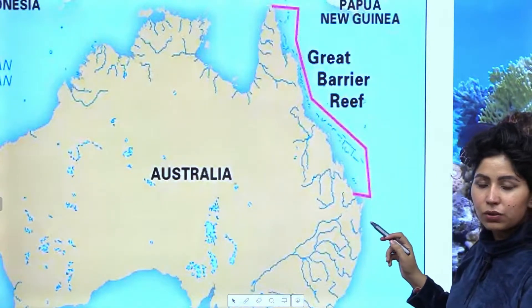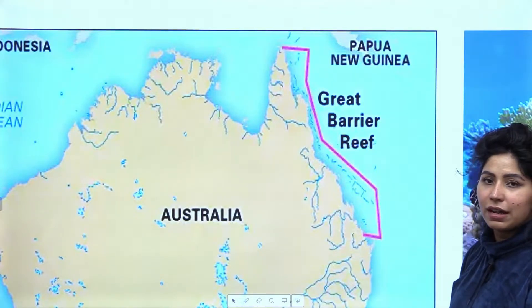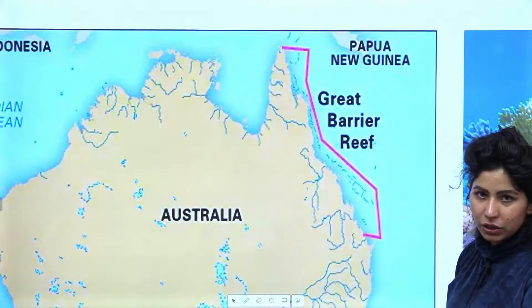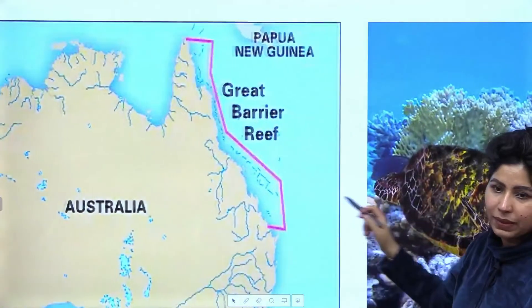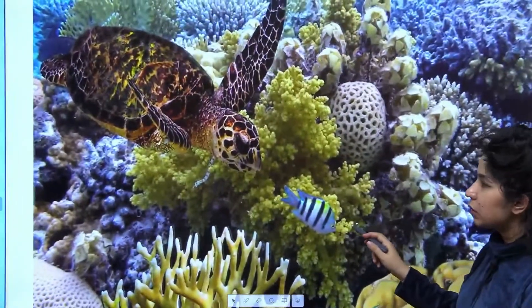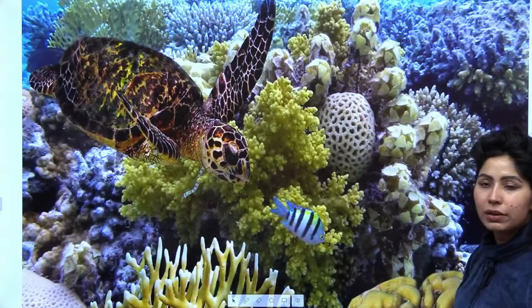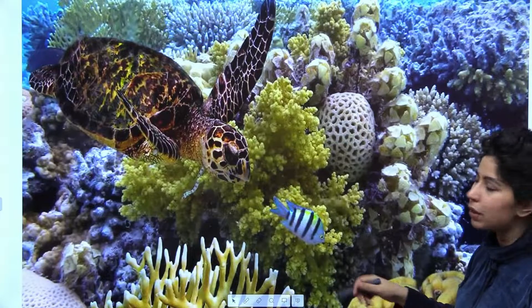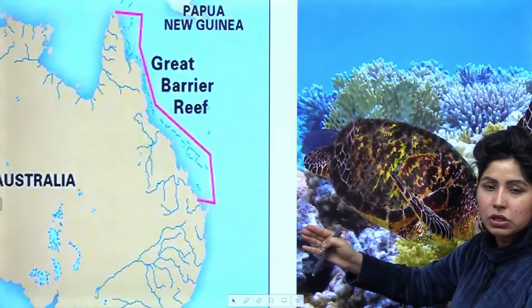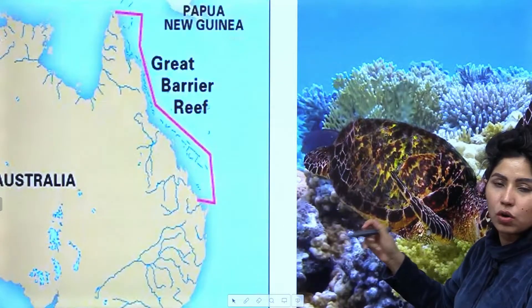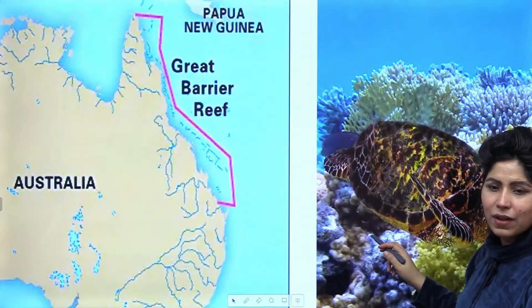The Great Barrier Reef is located here and is very important from an ecological point of view — that is what the Seize the Mains question is about for today. These are coral reefs, and a long chain of coral reefs is known as the Great Barrier Reef. It prevents Australia from strong tides, strong waves of the ocean, and strong natural disasters that might occur on its coastline, so it is very important in that way.